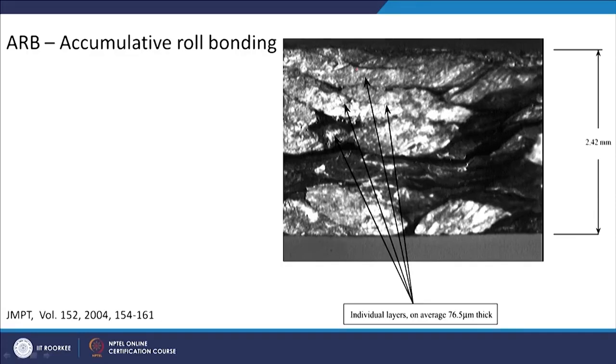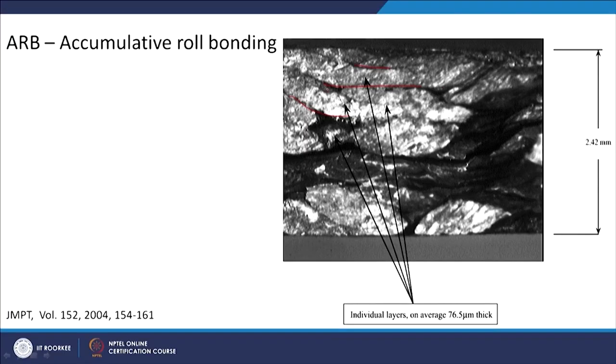In this micrograph you can see how the accumulated roll bonding layers are visible - these black lines are the interfaces where stacking was done. When you do the stacking, an interface will always be formed. Individual layers are said to be around 76.5 microns thick. Because of these interfaces, you would not get very good ductility in this material because the interface will cause the material to separate out and you would not reach the deformation you want.